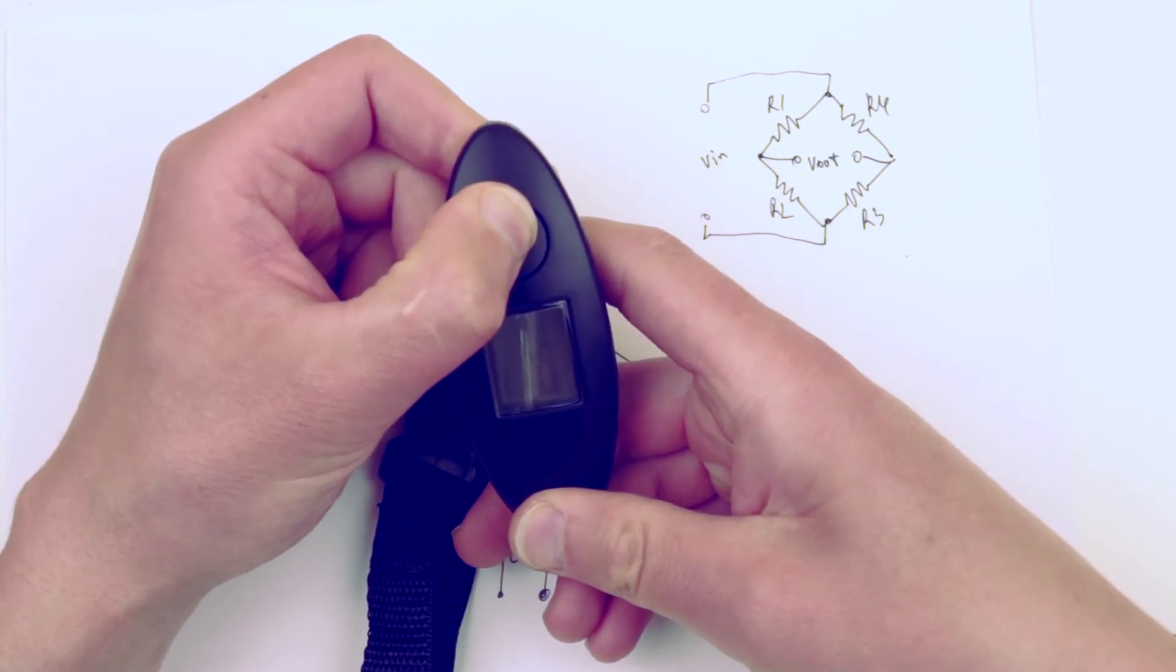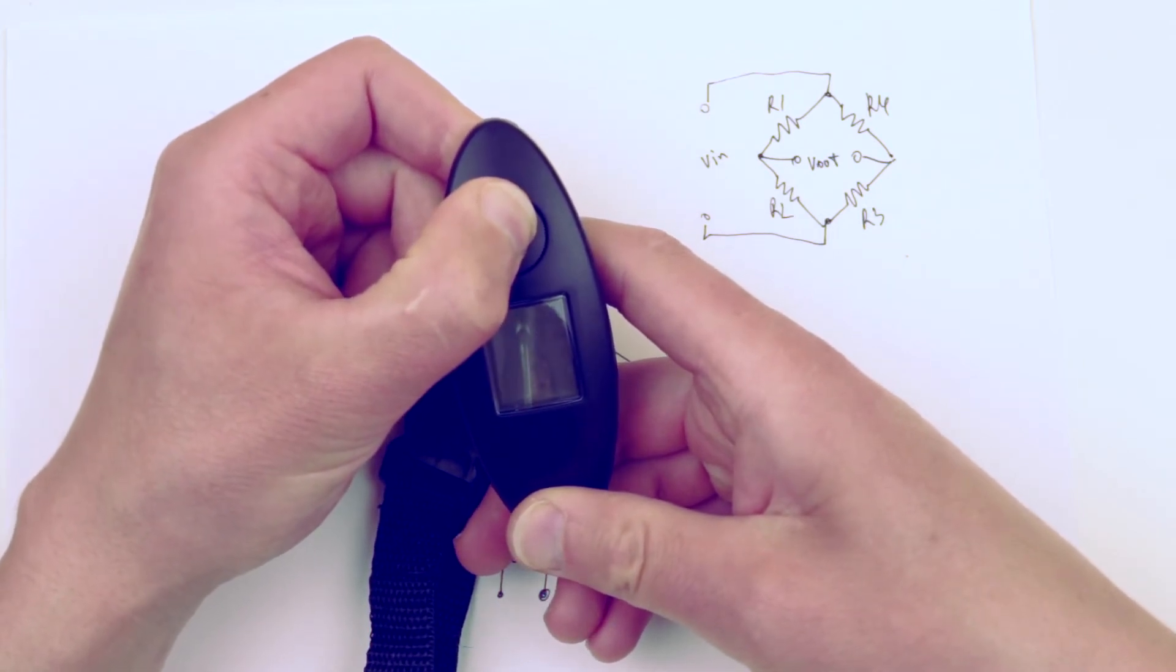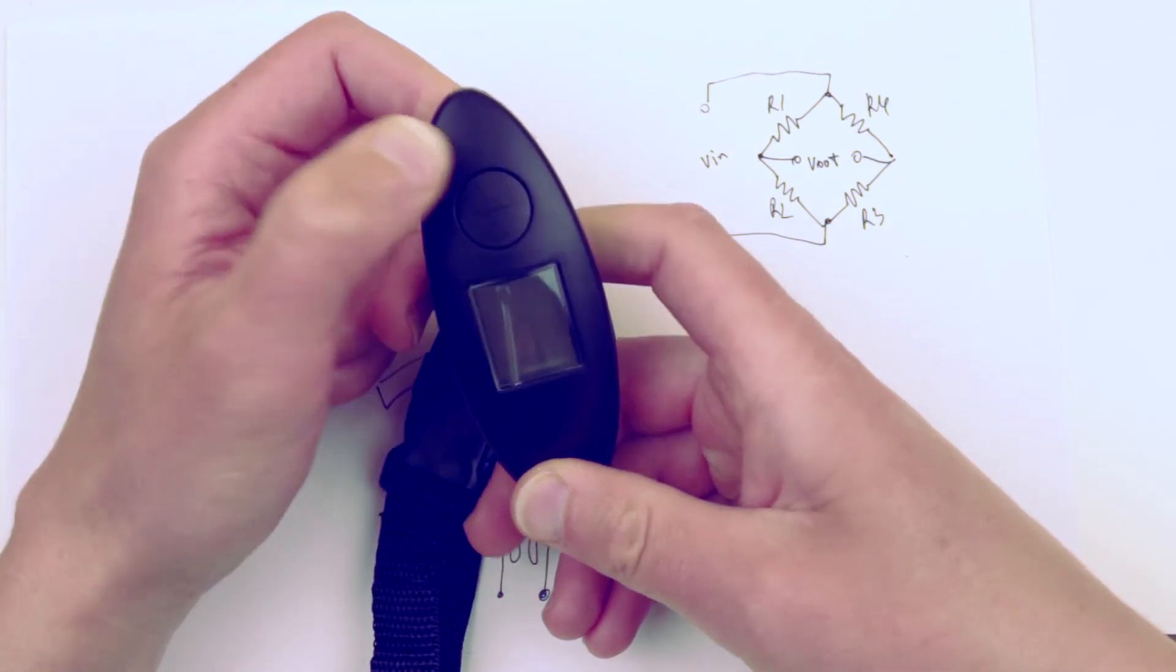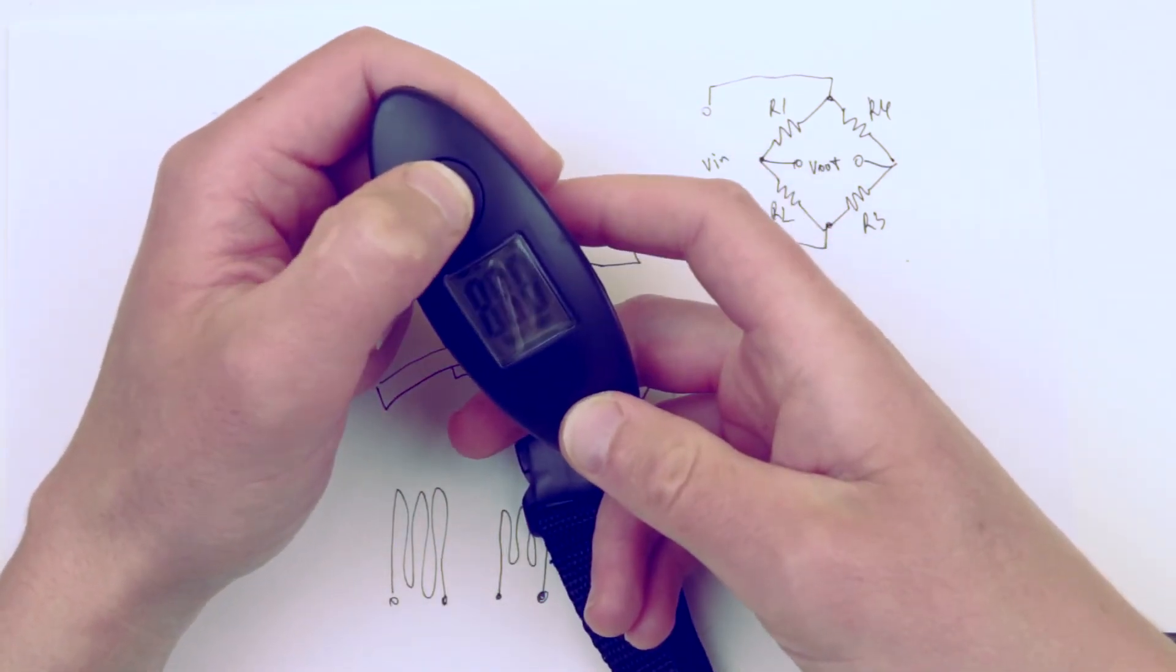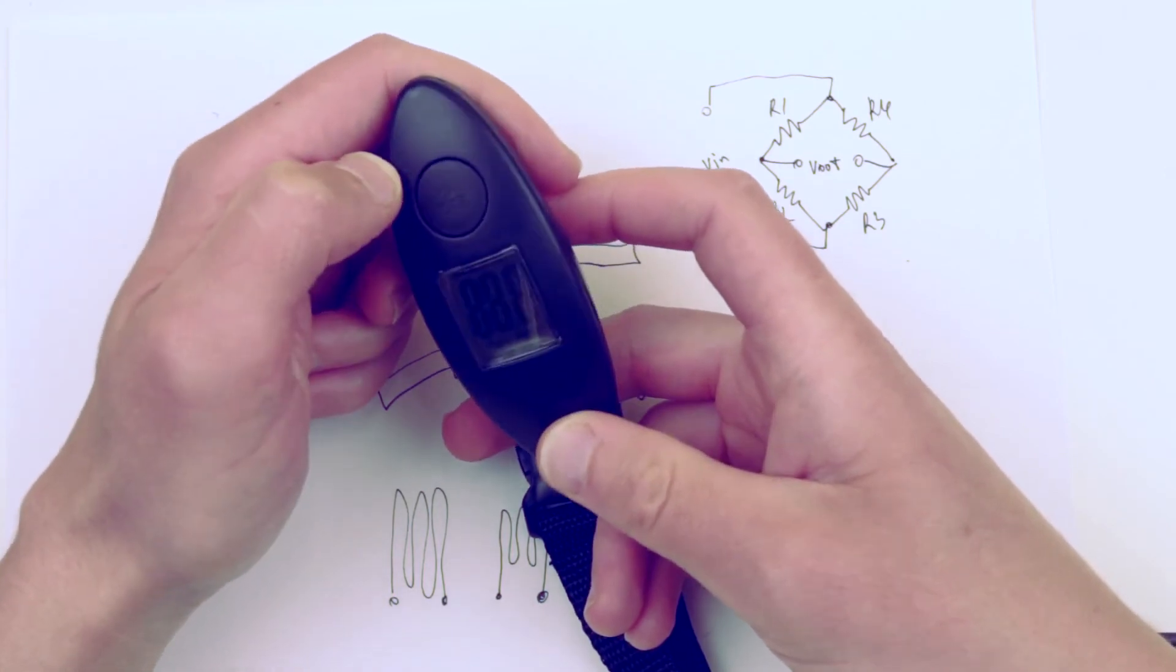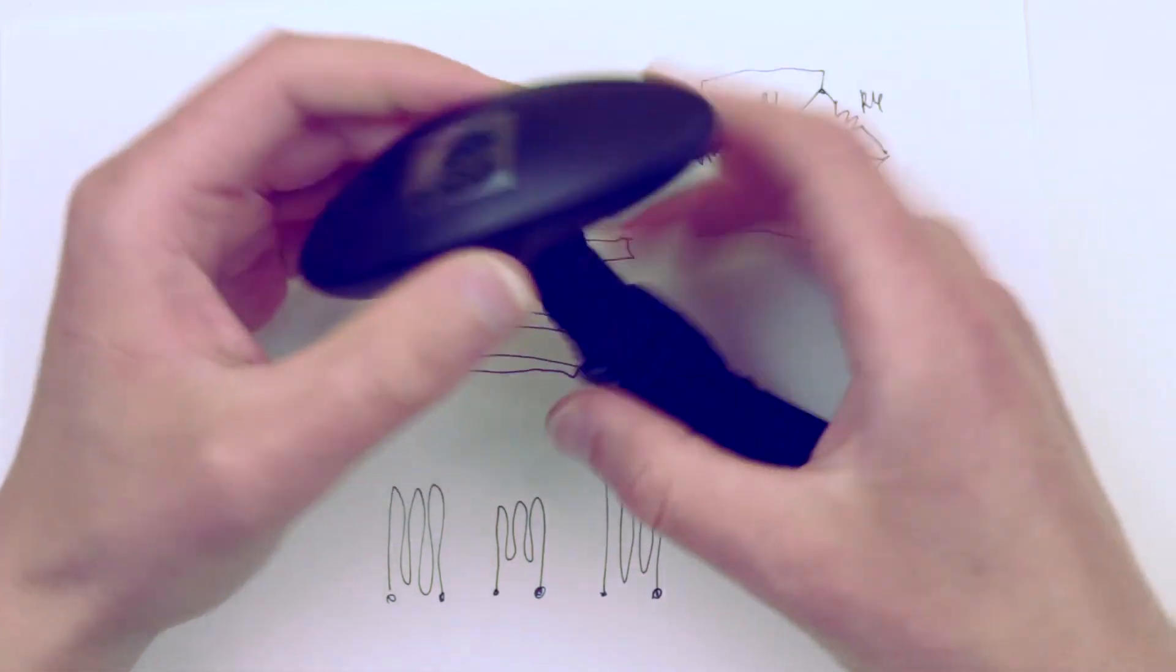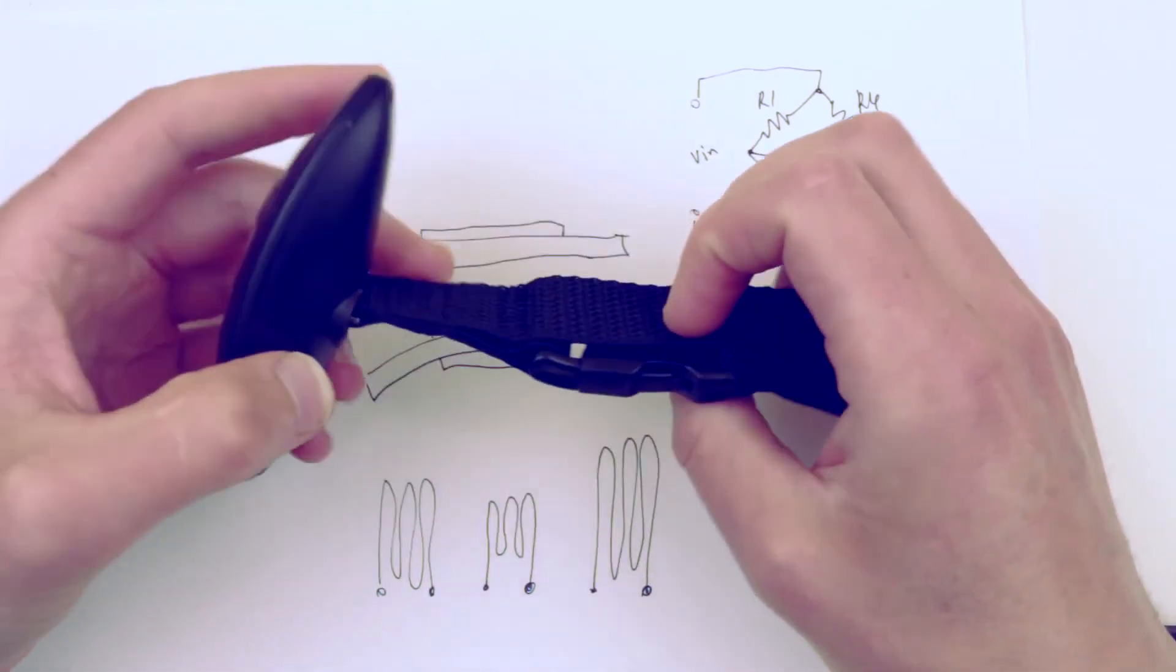After poking around quite a while, I was able to enter the calibration mode. It was asking to apply a load of 20 kilos, but I have no idea how I did that. I cannot repeat it anymore. Interesting.